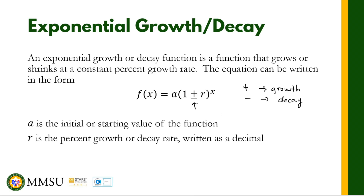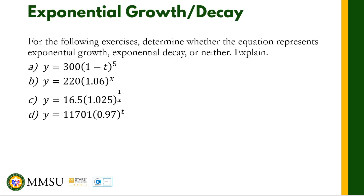Let us take a look at the following equations and determine if we have exponential growth or exponential decay. The first one: y is equal to 300 times (1 minus t) raised to the 5th power. The instruction is to determine whether the equation represents exponential growth, exponential decay, or neither, and to explain.